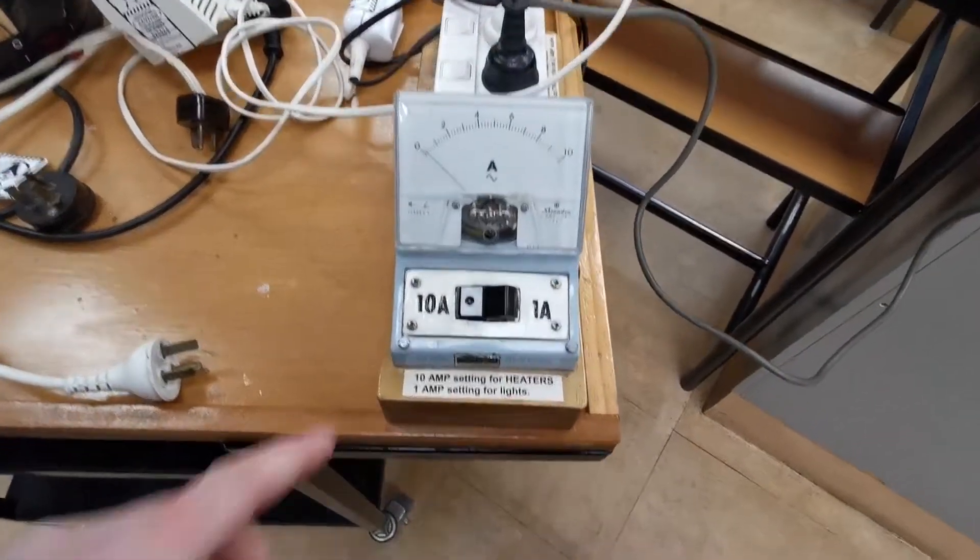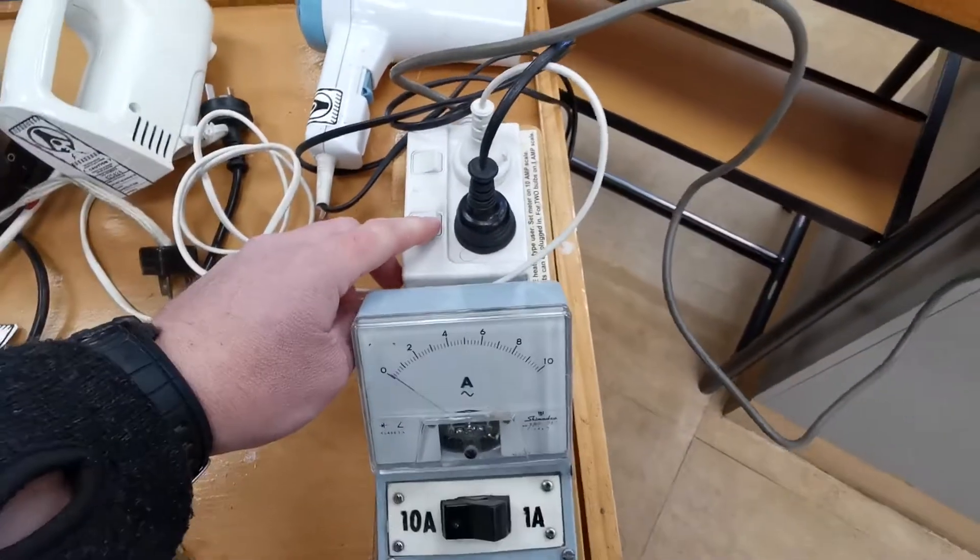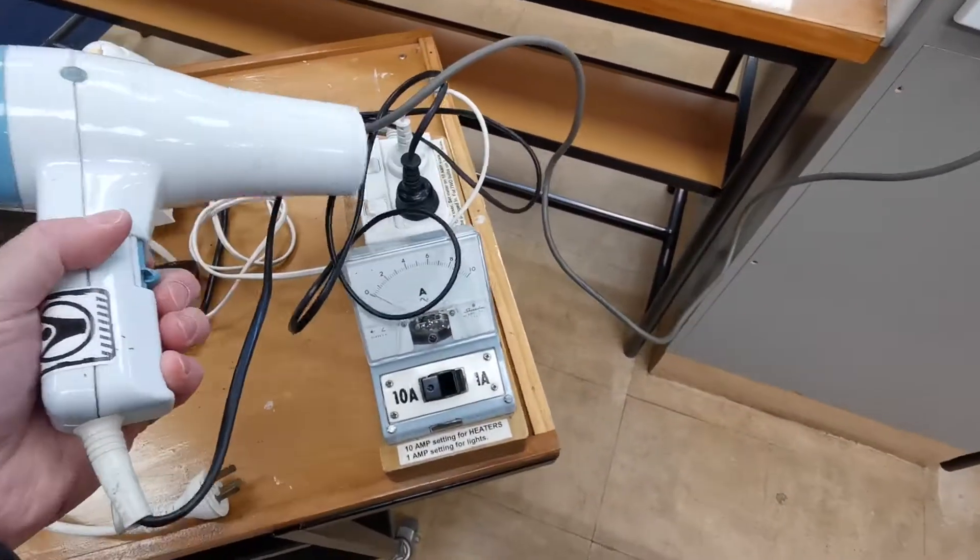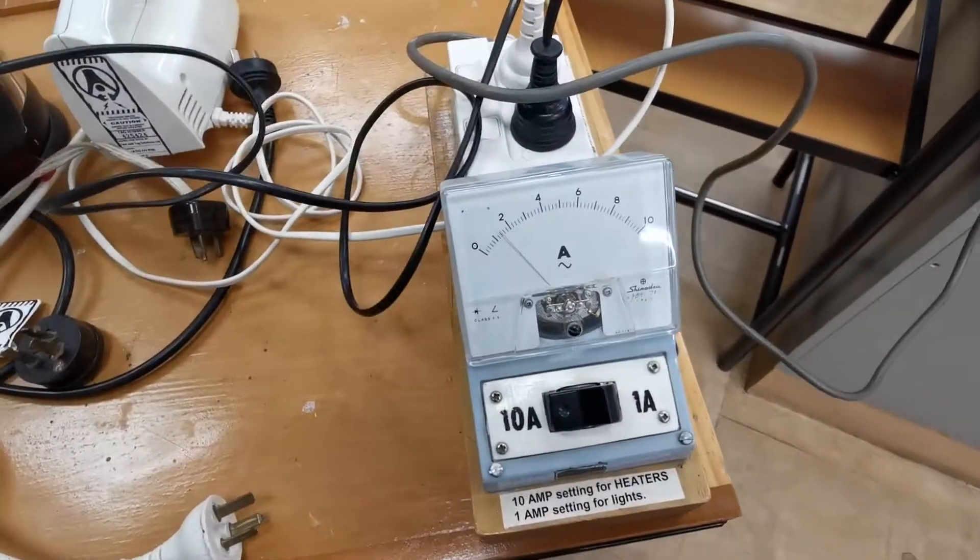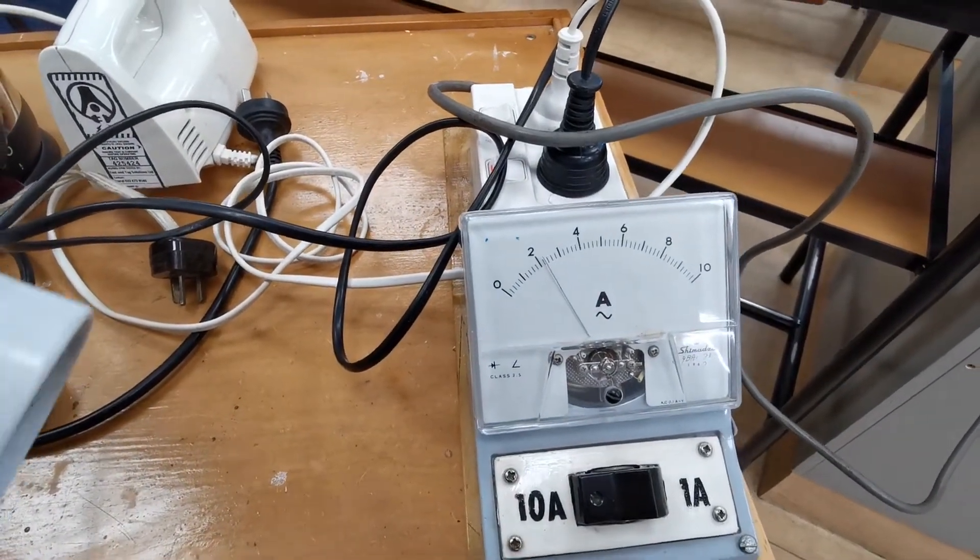The other way you can do this experiment is by using this ammeter, so I always start on the 10 amp setting. So that's the gray wire plugging into there, and we'll turn it on, but turn the hairdryer on. You can see that on low it draws just over 1 and then on high just over 2 amps at 240 volts.